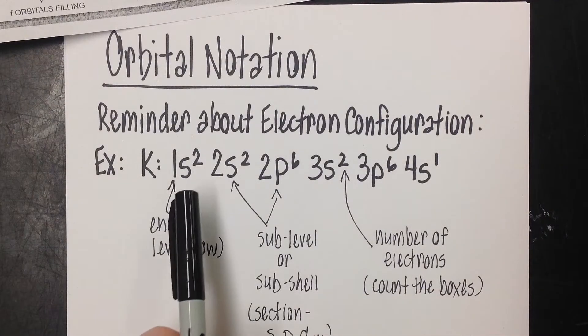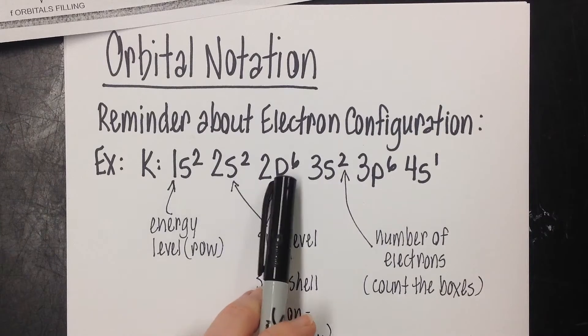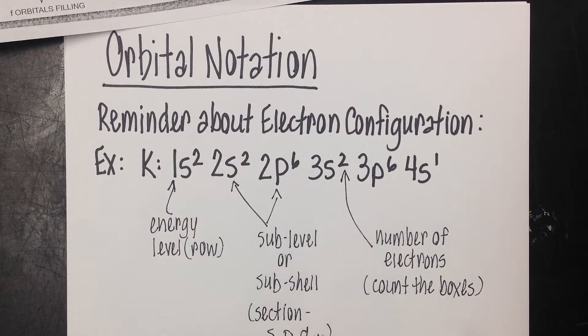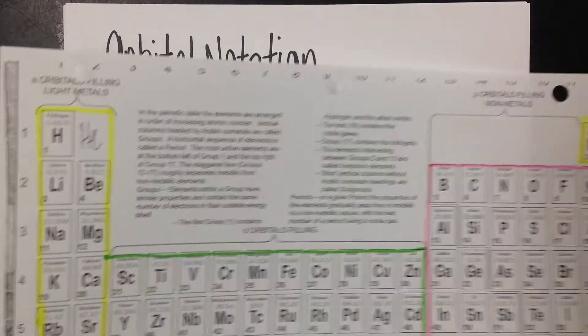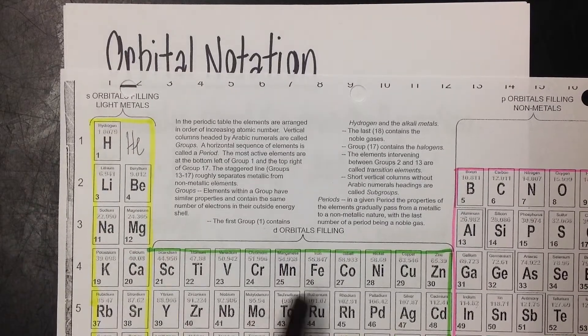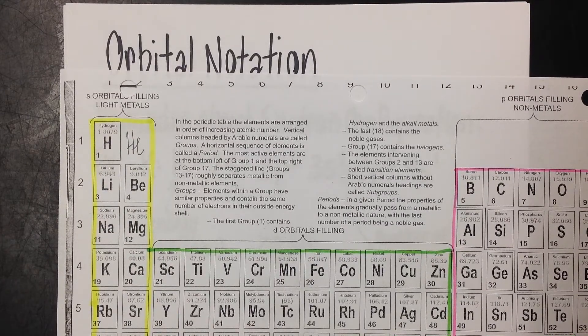And then the exponent that you see, these 2s and 6s, usually it's 2, 6, 10. At the very end, you're usually going to see one that's a little bit different. That's our number of electrons.